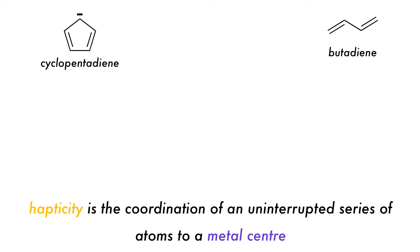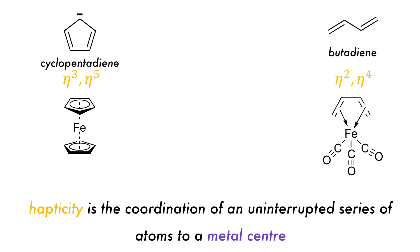Some ligands, such as the cyclopentadienyl anion and butadiene, can bind through multiple atoms that are beside each other. This is called hapticity, represented by the Greek letter eta. The cyclopentadienyl anion is usually eta-5, because it binds using all five carbon atoms, such as in this iron complex, but eta-3 systems are known to exist. Butadiene can be either eta-2 or eta-4, depending on if only one or both of the double bonds engages in coordination.